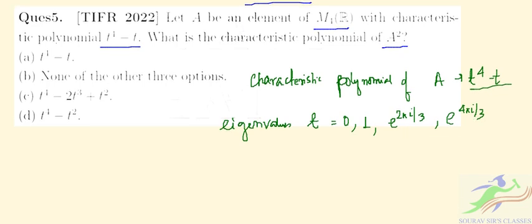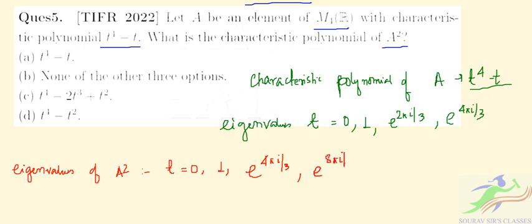What will be the eigenvalues of A²? The eigenvalues of A² will be λ = 0, 1, and since we square them, e^(2πi/3) becomes e^(4πi/3), and e^(4πi/3) becomes e^(8πi/3).